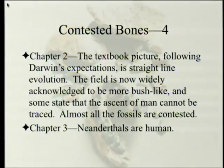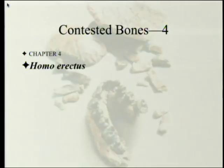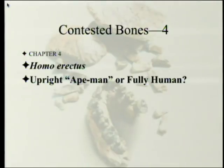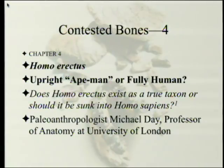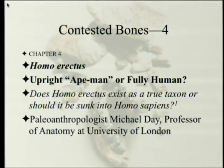Chapter three can be summarized very simply: Neanderthals are basically human variants. And now we come to chapter four, which is Homo erectus, and the question they raise is: upright ape-man or fully human? The quote at the beginning is: does Homo erectus exist as a true taxon, or should it be sunk into Homo sapiens? That's a question raised by Michael Day, Professor of Anatomy at the University of London, and as far as I know, a believer in ape-to-man transition.